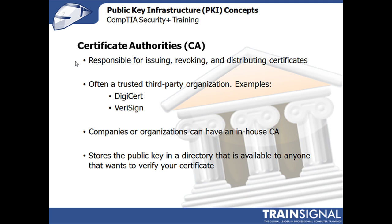A certificate authority is a server responsible for issuing, revoking, and distributing digital certificates. This is often a trusted third-party organization. Commercial examples are DigiCert and VeriSign. But companies and organizations can create their own in-house CA. For example, the Windows Server products offer tools to create a local certificate authority. The CA also stores the public keys in a directory that is available to anyone that wants to verify your certificate.